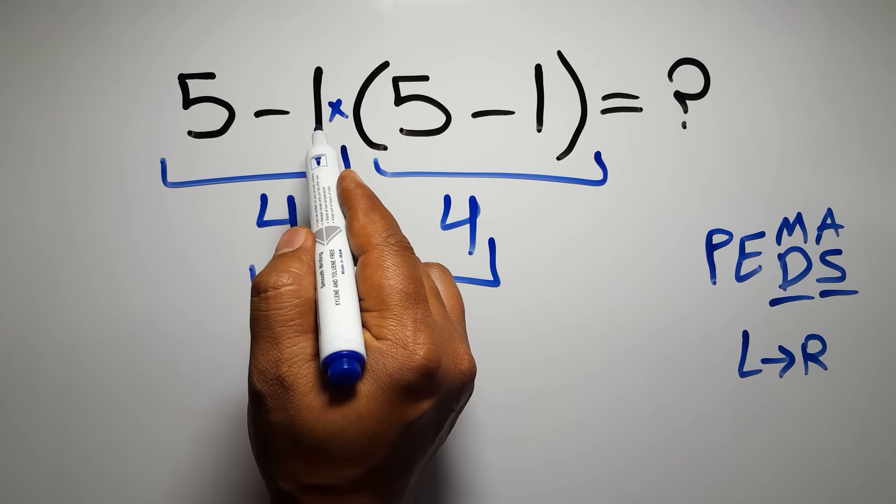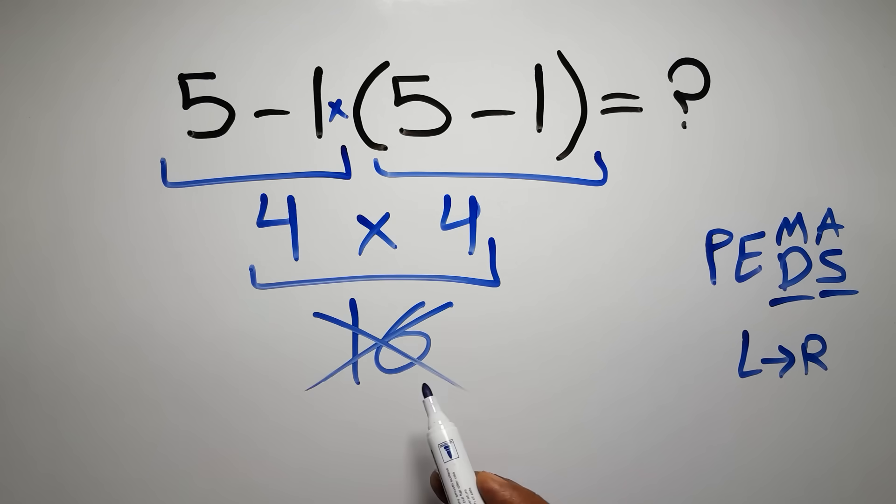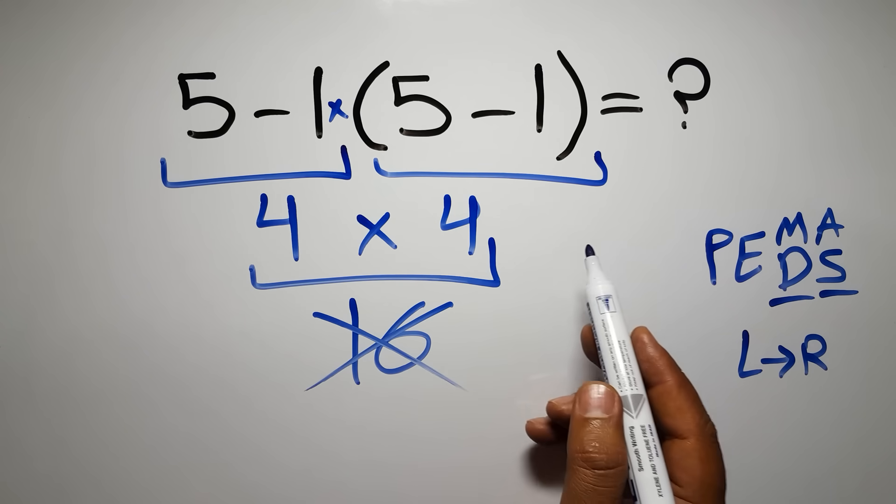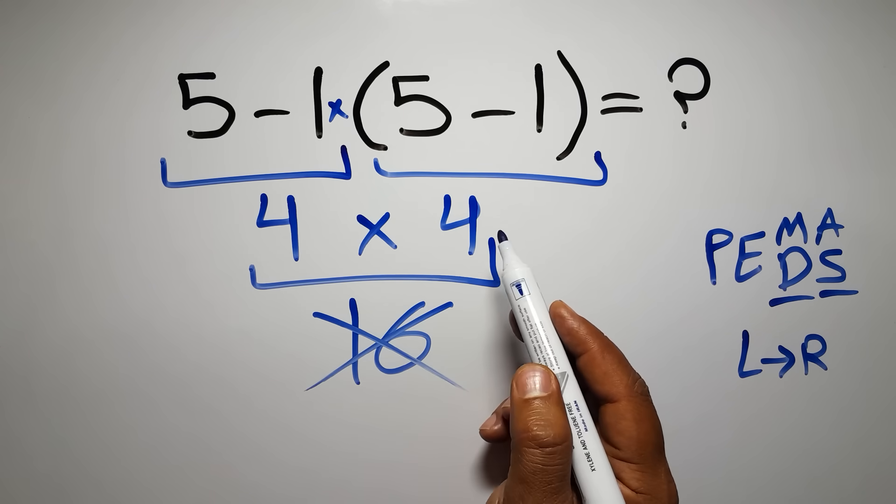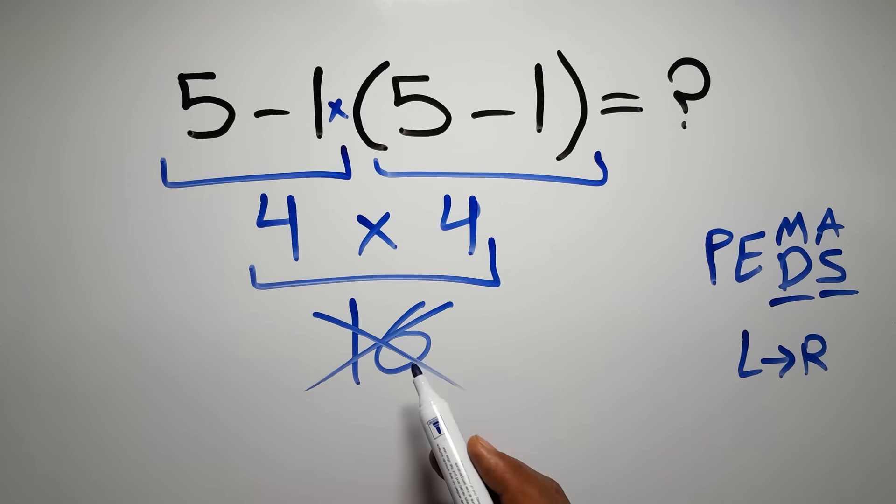According to the order of operations, first we have to do these parentheses, then this multiplication, and finally this subtraction.